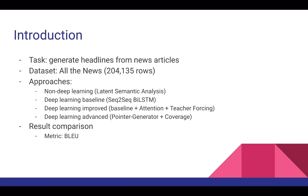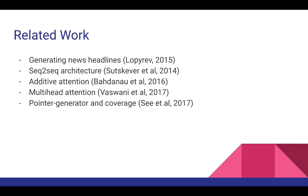We will be comparing the summary generation results using a common metric in machine translation called BLEU. Our project is built on previous research in the field of machine translation. The main goal is to improve results from the 2015 project. The main architecture is the sequence-to-sequence network published in 2014. We adopted the ideas of pointer generator and coverage from Abigail C's paper.